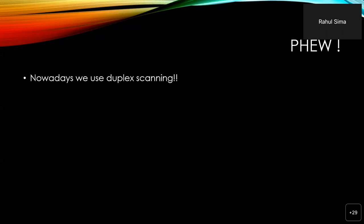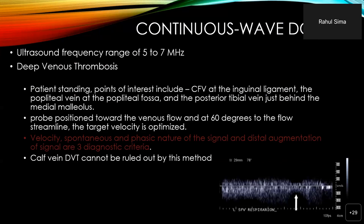Nowadays we have duplex scanning. First, continuous wave Doppler uses an ultrasound frequency range of 5 to 7 MHz and can be used for both DVT and venous insufficiency. To assess DVT using a handheld Doppler, the patient is in the standing position. Points of interest include the common femoral vein at the inguinal ligament, the popliteal vein in the popliteal fossa, and the posterior tibial vein behind the medial malleolus at the ankle. The probe is positioned towards venous flow at a 60-degree angle. The three diagnostic criteria to rule out DVT are the velocity of flow, the spontaneous and phasic nature of the signal, and distal augmentation of the signal on compression.